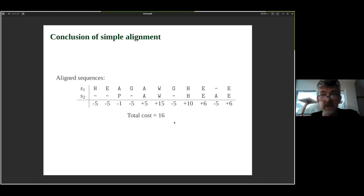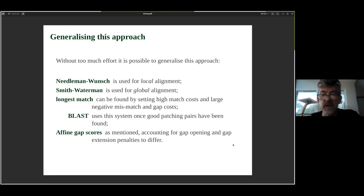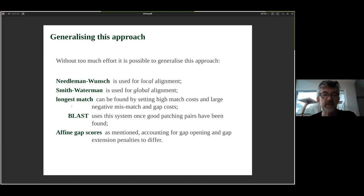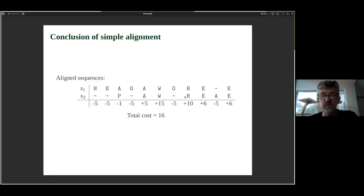That's what happens in the background so you don't have to do it manually. This approach is very general. There are varieties for different circumstances: Needleman-Wunsch is used for local alignment — a simple adaptation to find the best match of one sequence in any part of another sequence. Smith-Waterman is what we've shown here — global alignment, finding the best alignment of all of one sequence with all of another. You can also adapt it to find the longest perfect match between sequences by assigning different costs.